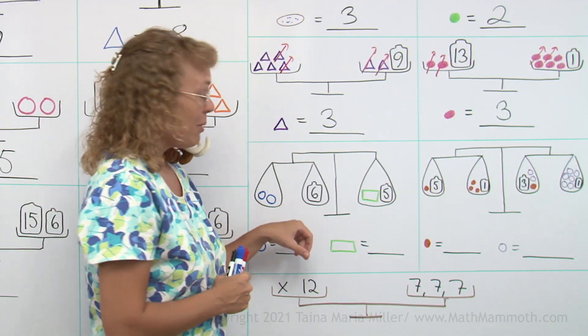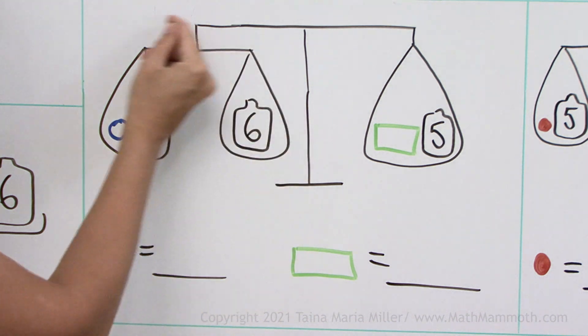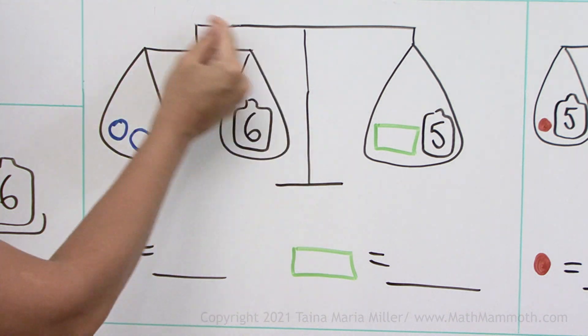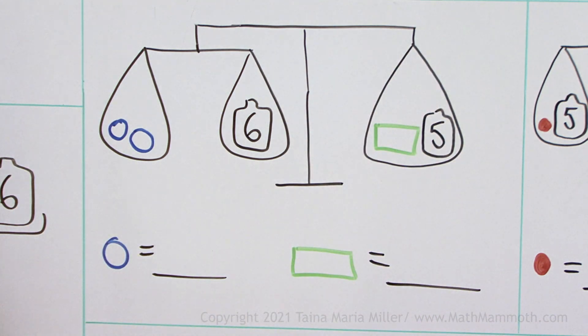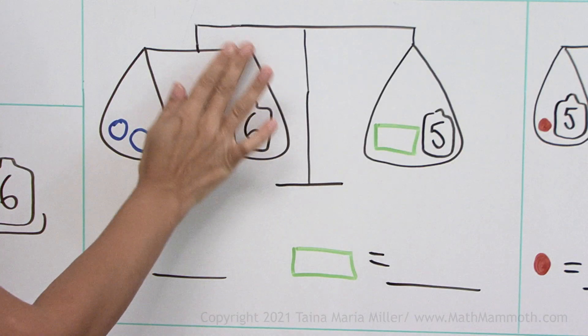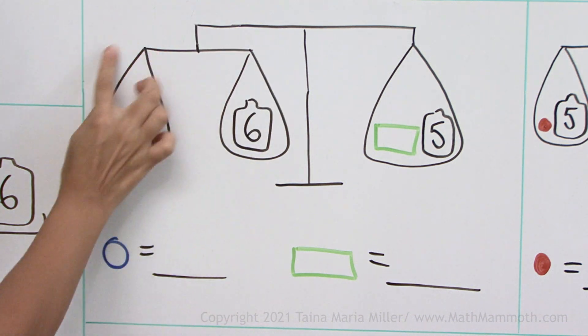And now let me explain how we will solve this. You have to think that all of this on this side weighs the same as all of this on this side. But also, here is a scale in itself. So this side weighs the same as this.